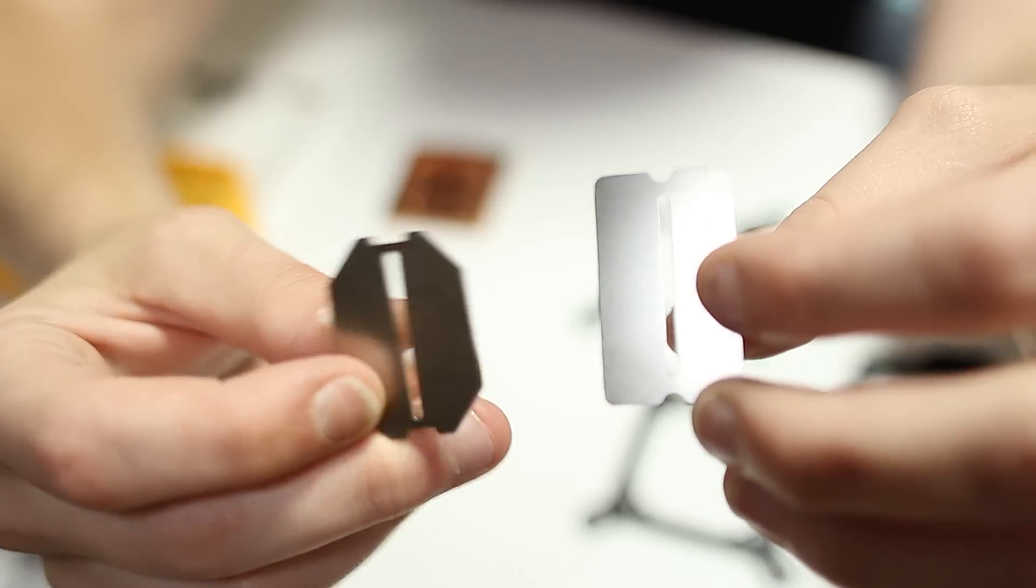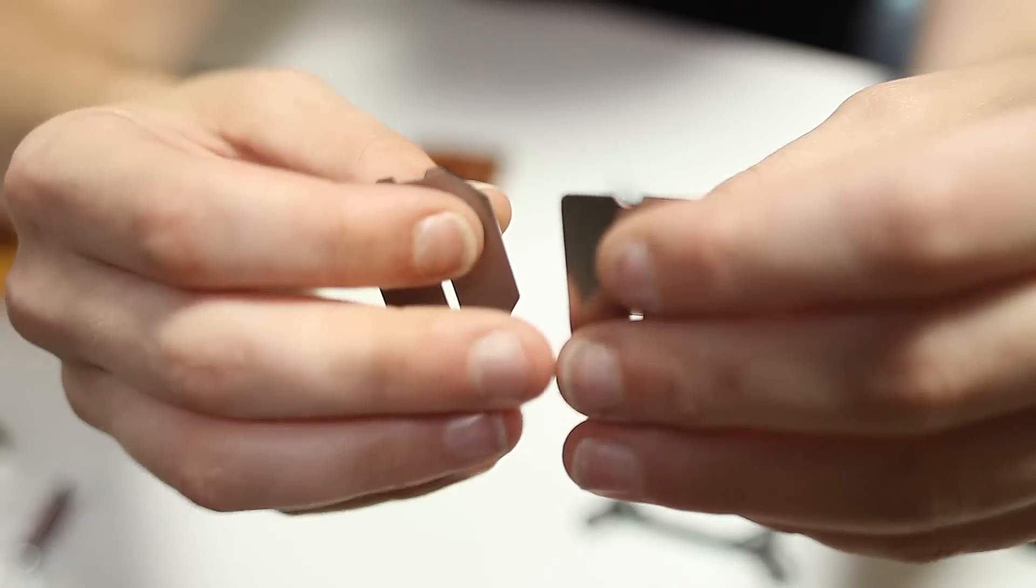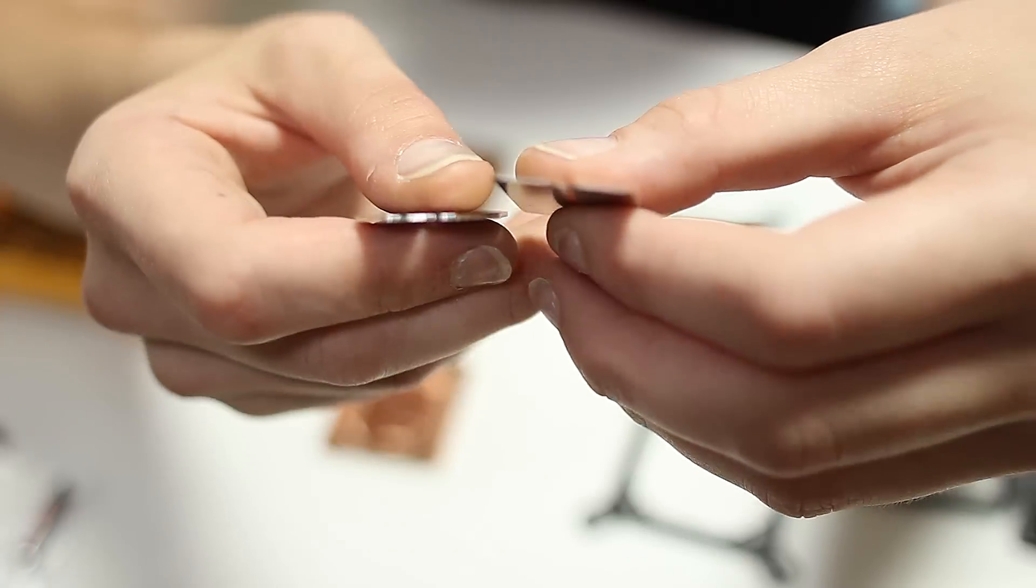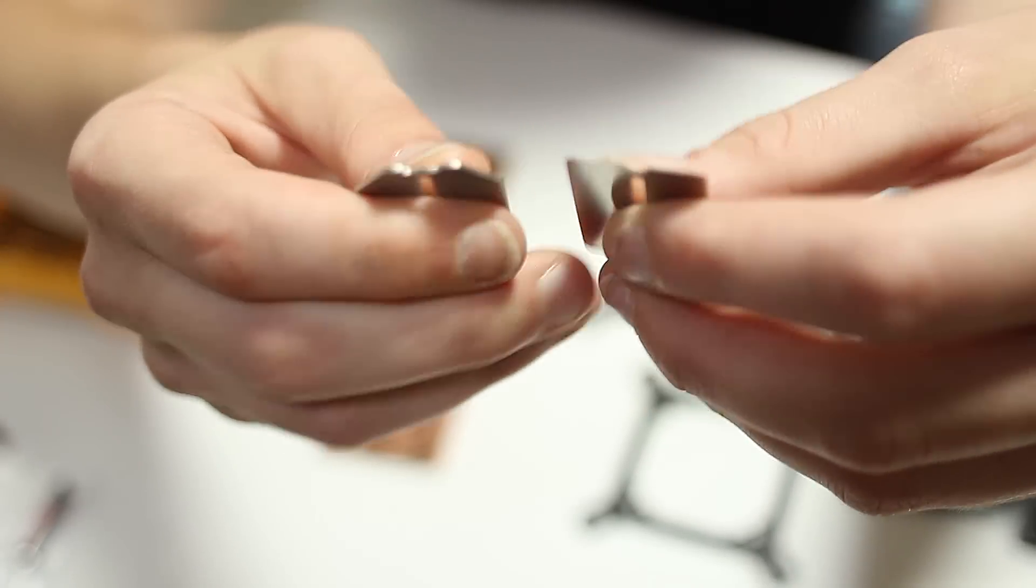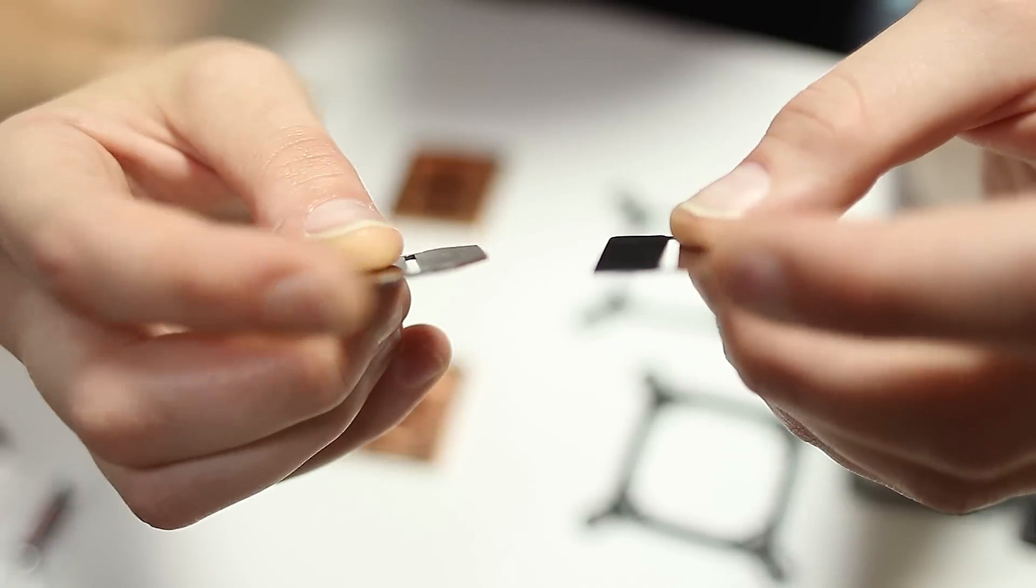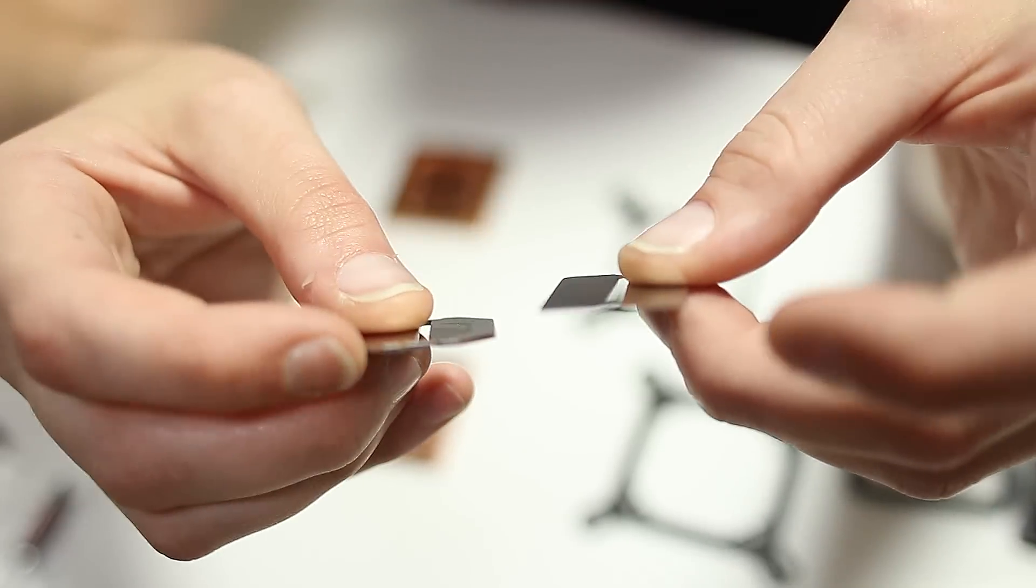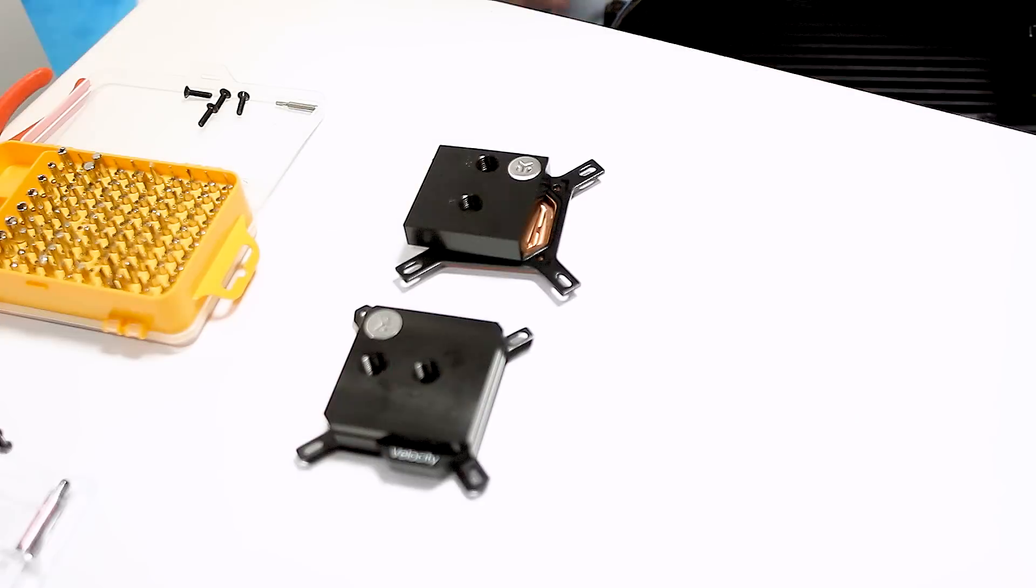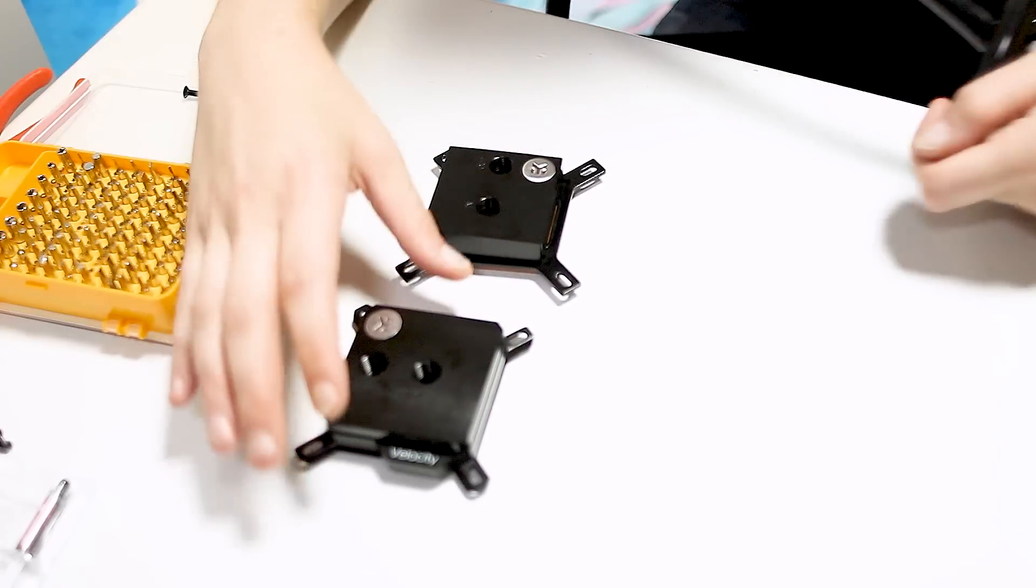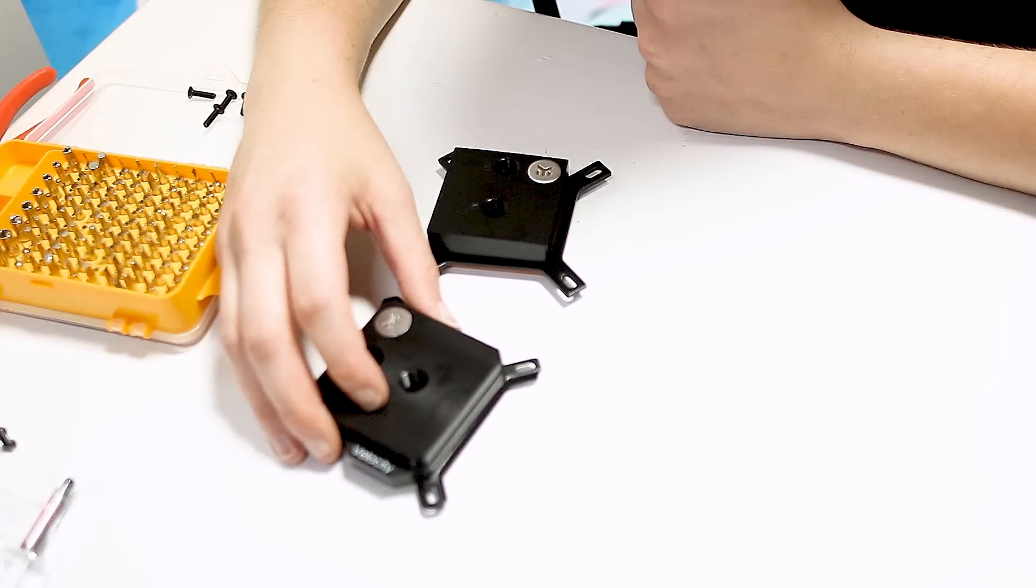Also, here are the two jet plates. This is the Supremacy Evo jet plate, and this is the Velocity jet plate. It's going to take a while for me to get used to saying Velocity instead of Supremacy Evo. And the number one difference is the shape. And the Supremacy Evo plate looks twice as thick, or three times as thick. So that's pretty much the difference between the cold plates and the blocks themselves.